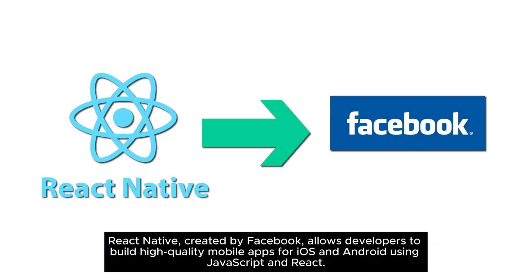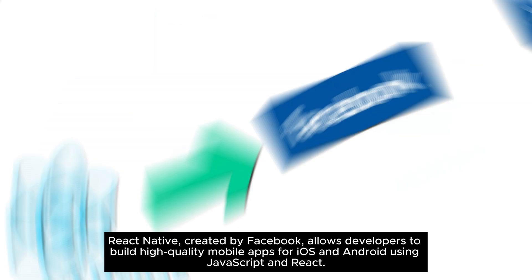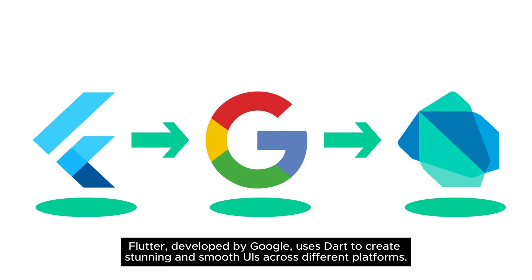React Native, created by Facebook, allows developers to build high-quality mobile apps for iOS and Android using JavaScript and React. Flutter, developed by Google, uses Dart to create stunning and smooth UIs across different platforms.